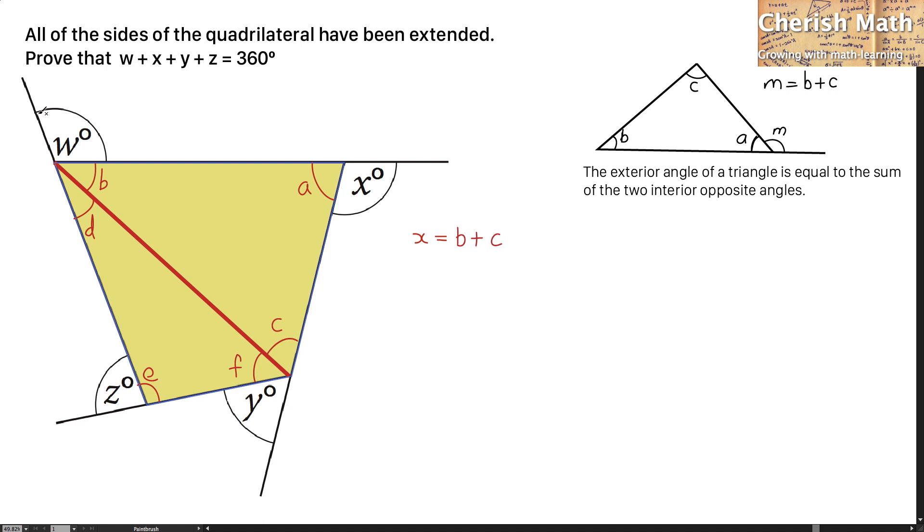Now I'm going to look at this part, which is W and B together. W plus B, which is an exterior angle to the triangle located at the bottom, is the same as E plus F.